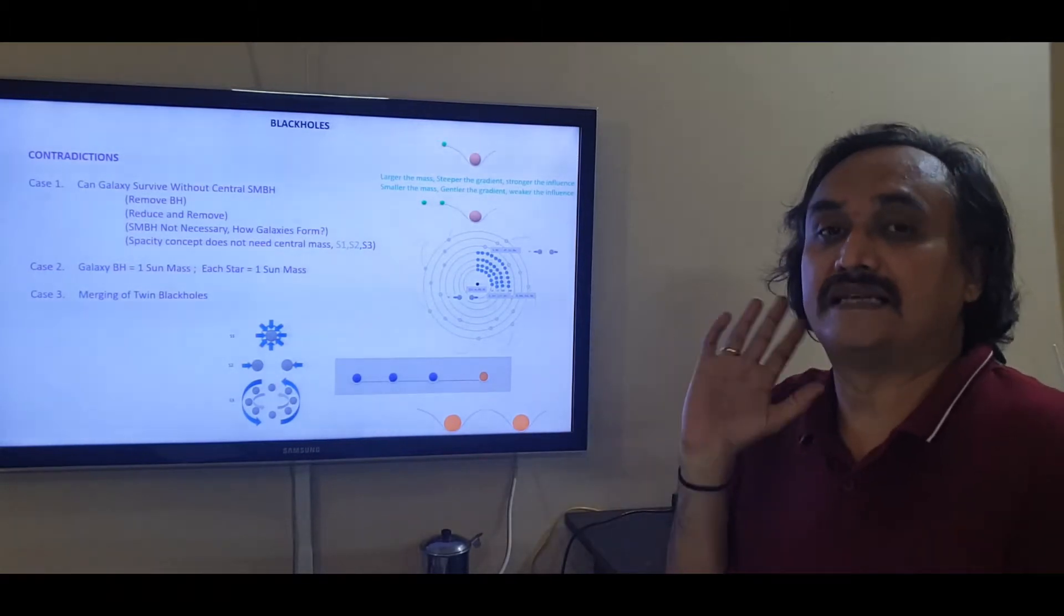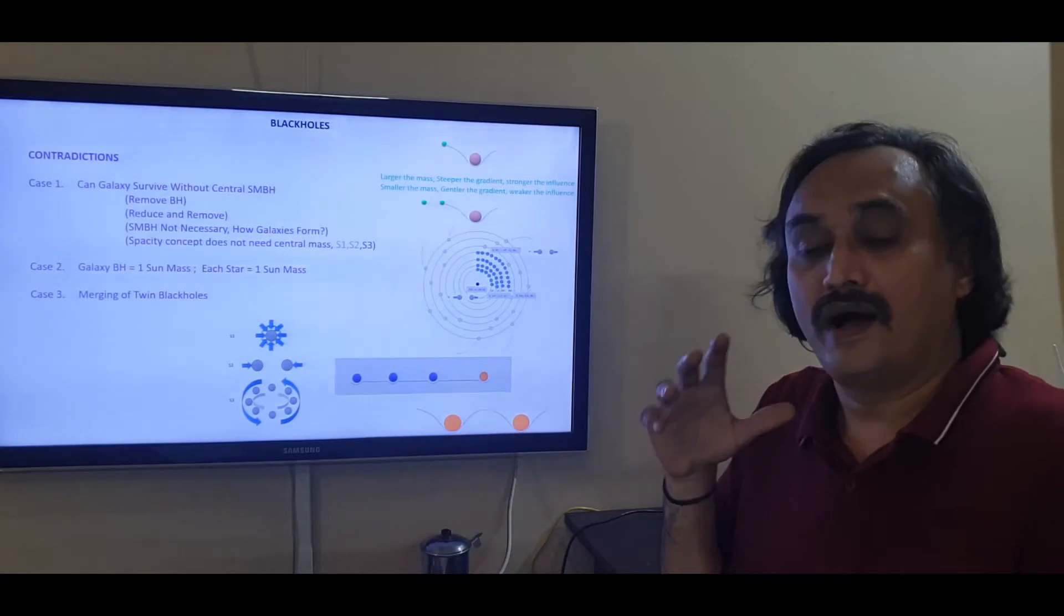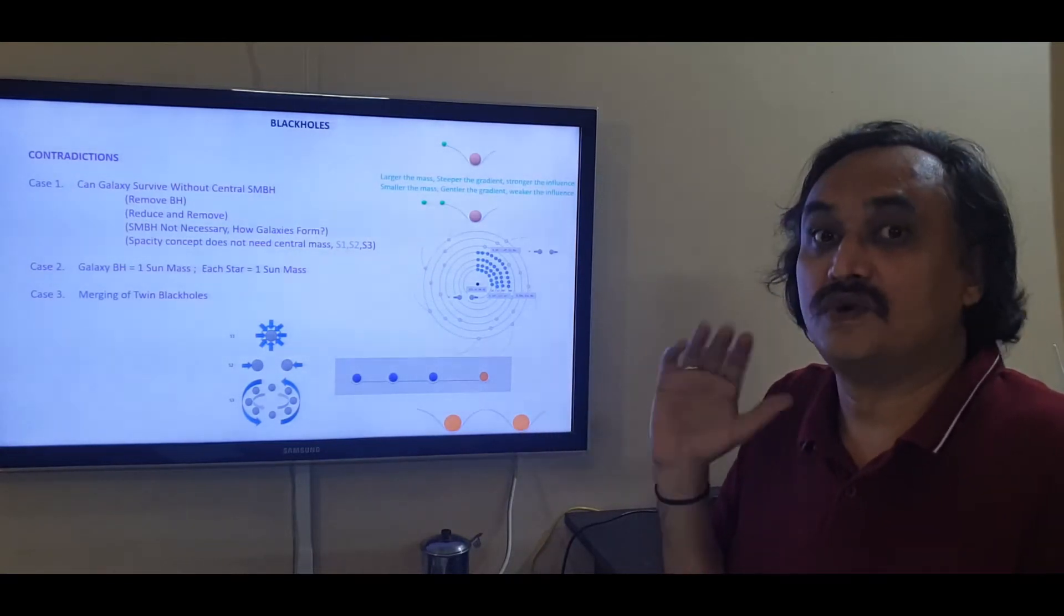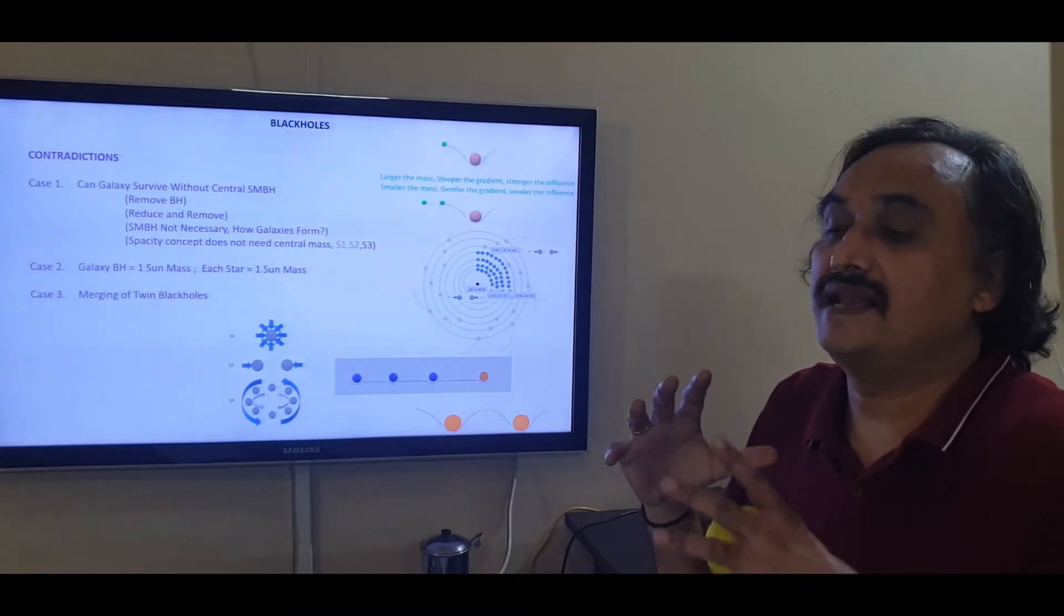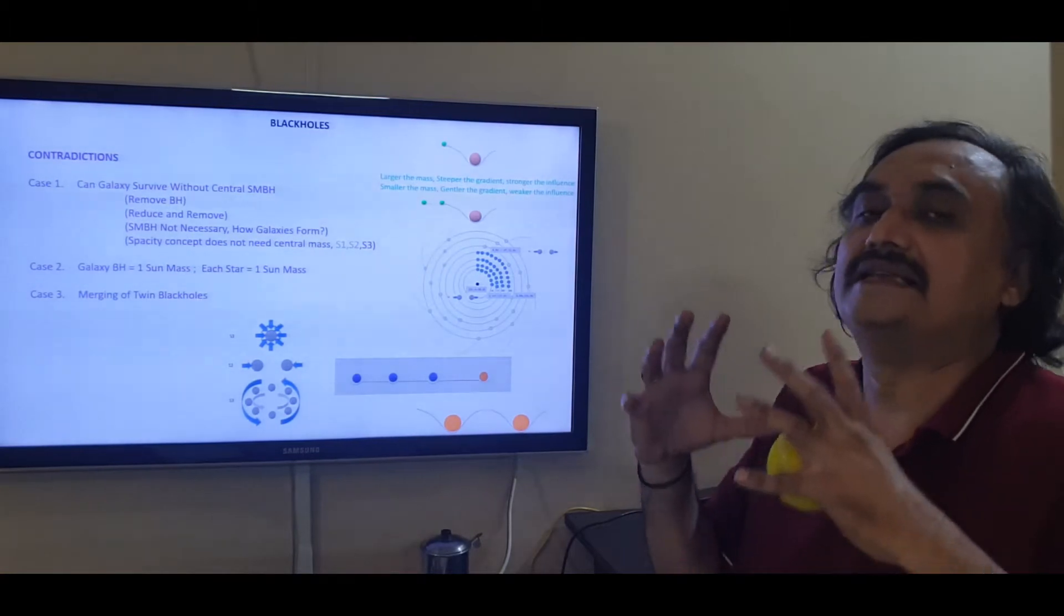Let us go one step further. Now let us again remove 100 sun masses from the supermassive black hole. Now again the influence decreases a bit, but the stars don't fly away, the galaxy doesn't disintegrate. The galaxy size increases. The shape is the same but the size increases.